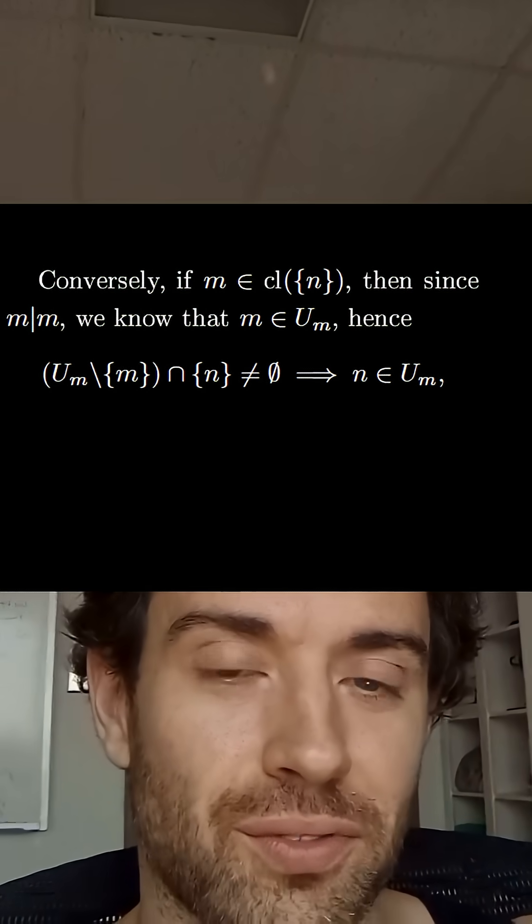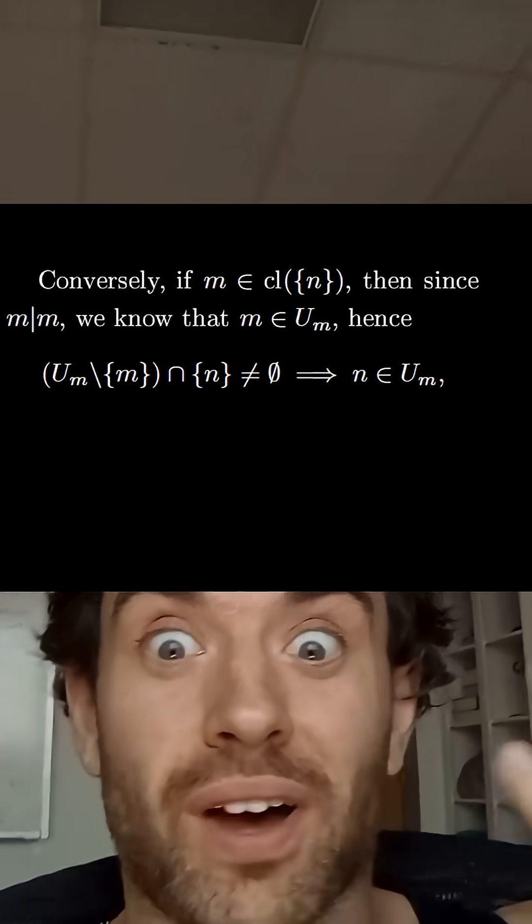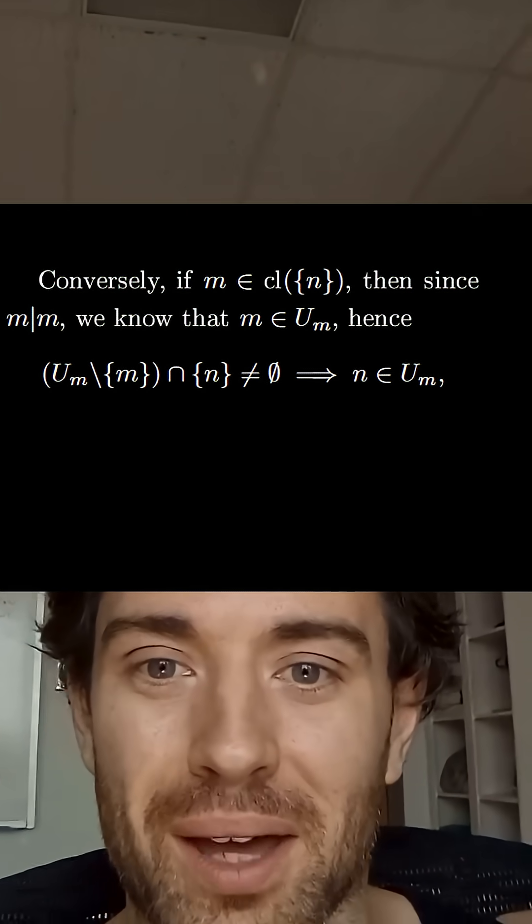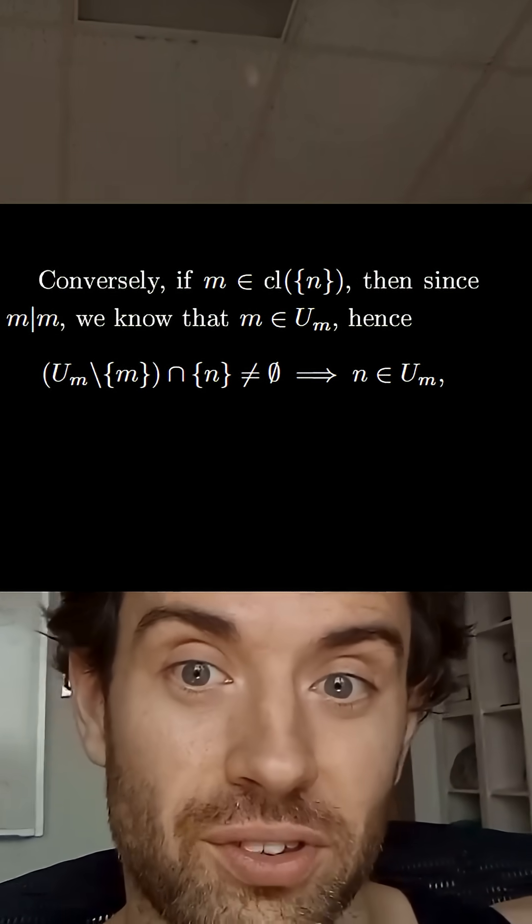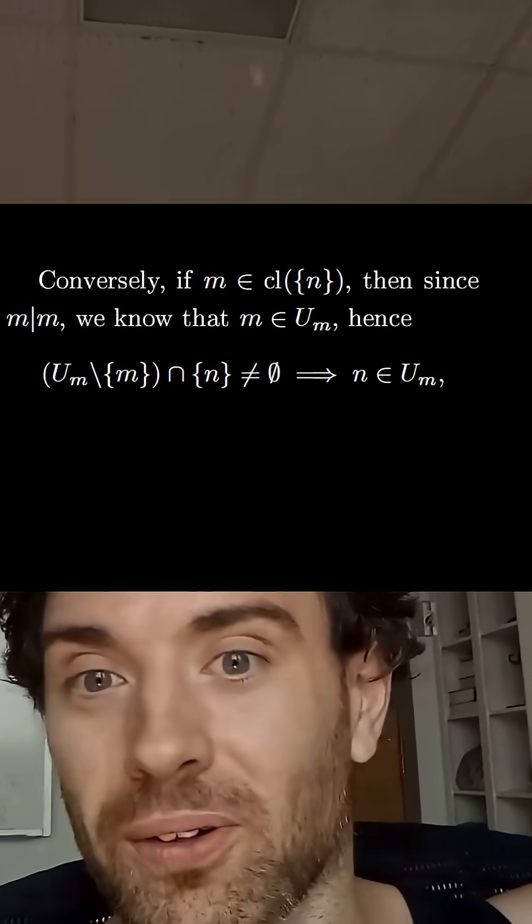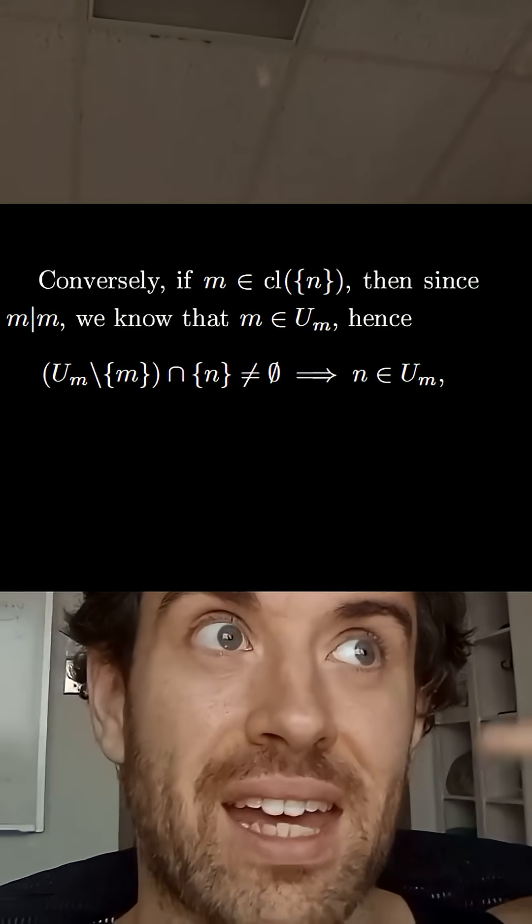Conversely, if m is an element of the closure, we know that m divides m so it is in U m, and so since it is in the closure, we know that the intersection of every open set minus that point m itself intersect with n has to be